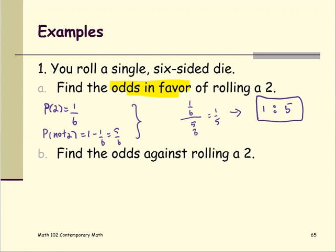The next part, odds against rolling a 2. That would be the form of the probability of not rolling a 2. So in the previous problem, I should put it here as P of 2 divided by P of not 2.